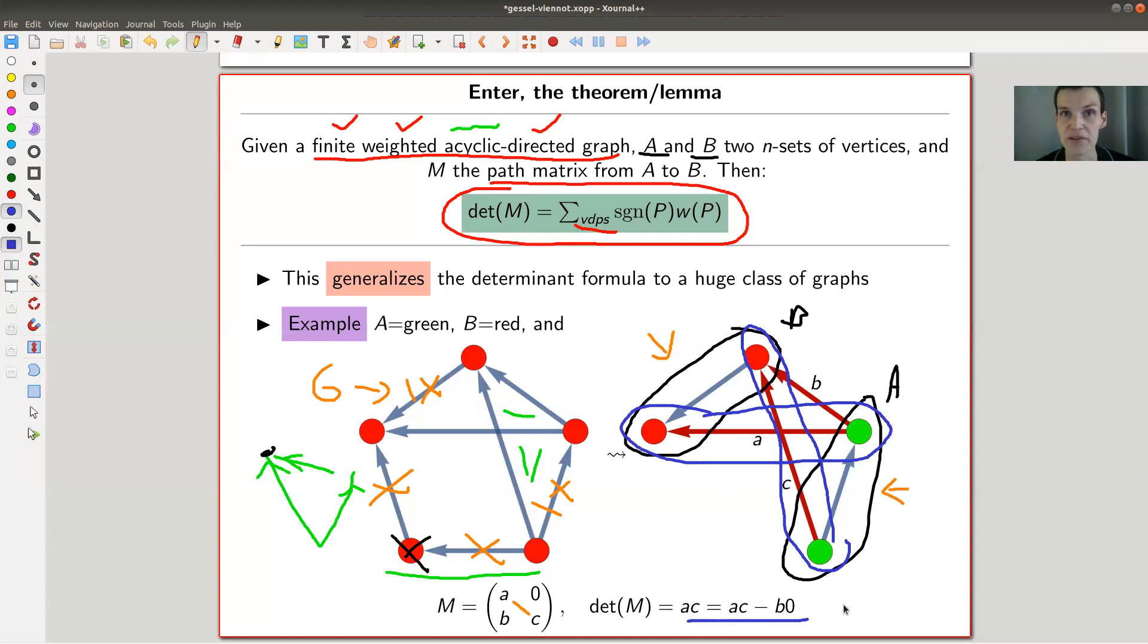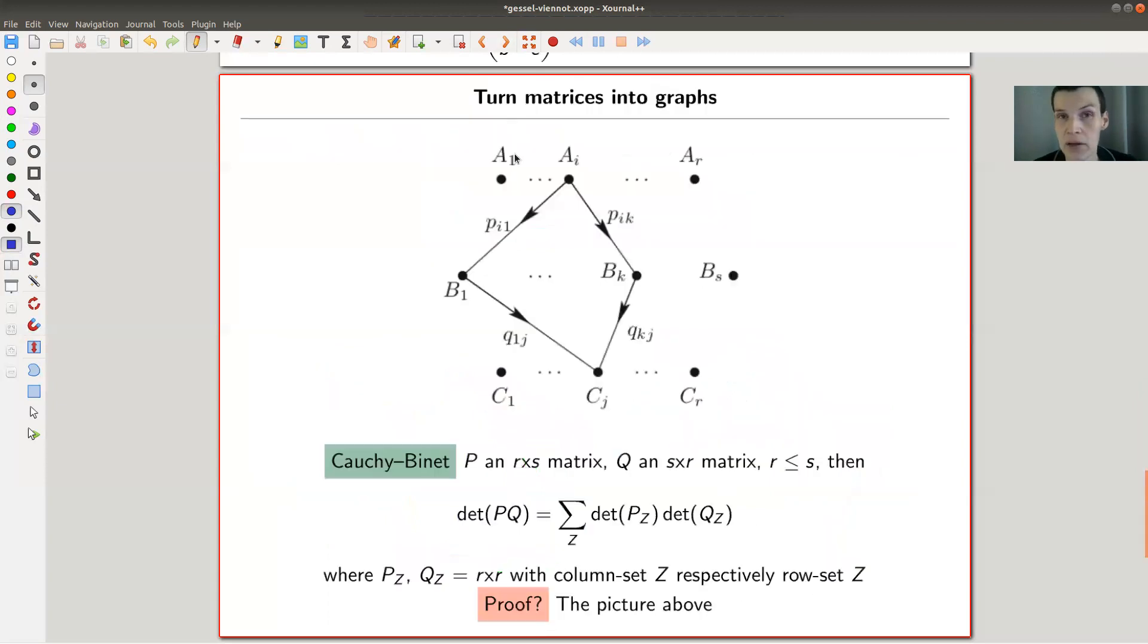So huge generalization of the determinant formula. And it took, whatever, 200 years to be found. Very amazing. And of course, this is then extremely practical. So what people like to do with this lemma theorem, whatever you want to call it, is whenever you have a determinant problem, for example, and you don't really want to compute the determinant because computing determinants is a bit tricky. So you just turn it into a problem in graph theory and you count those paths instead of, right, to just count paths in a graph.